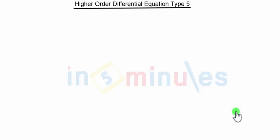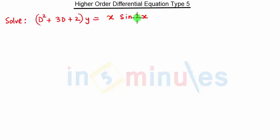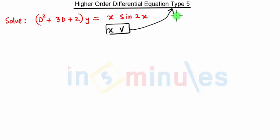Hello everyone, welcome to 'In 5 Minutes.' In this video we are going to see the next problem on higher-order differential equations. If you see, this part is of the form X into V, which indicates that it is of Type 5. The solution is given by Y equal to Y_C plus Y_P.